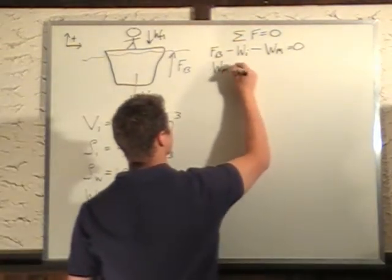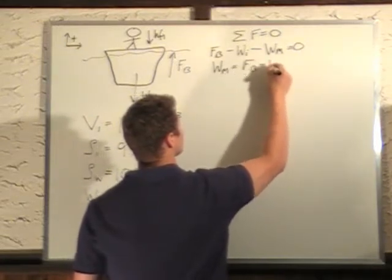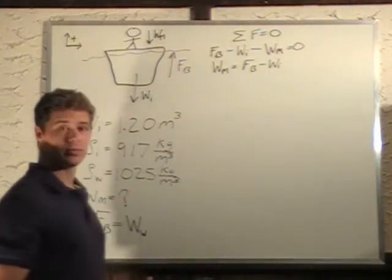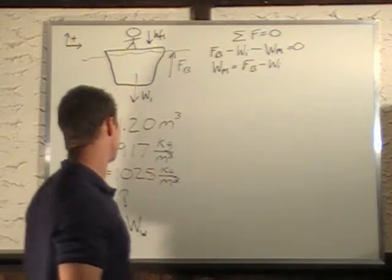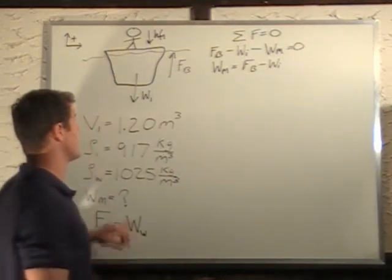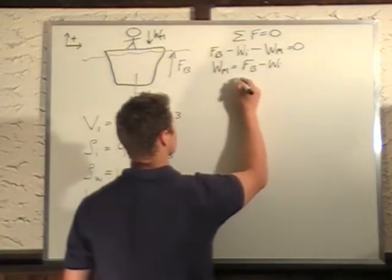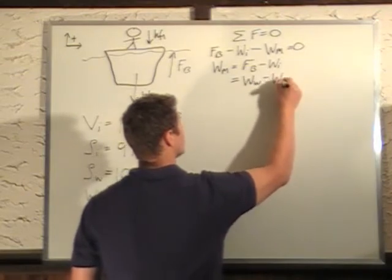Weight of the man is equal to buoyant force minus weight of the ice. So we're going to do some substituting. We know that the buoyant force is simply equal to the weight of the water that's displaced. So I'm going to plug this in. Equal to weight of the water minus weight of the ice.